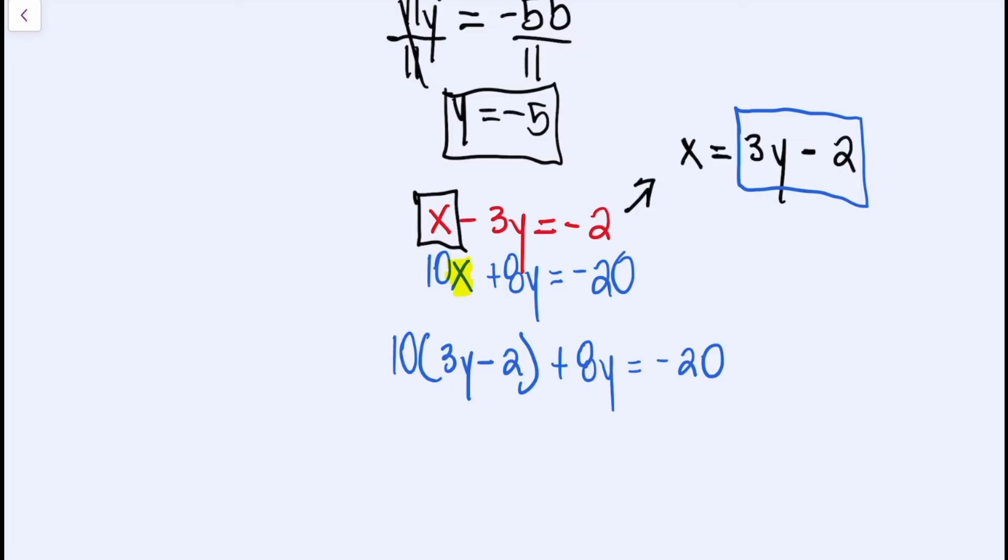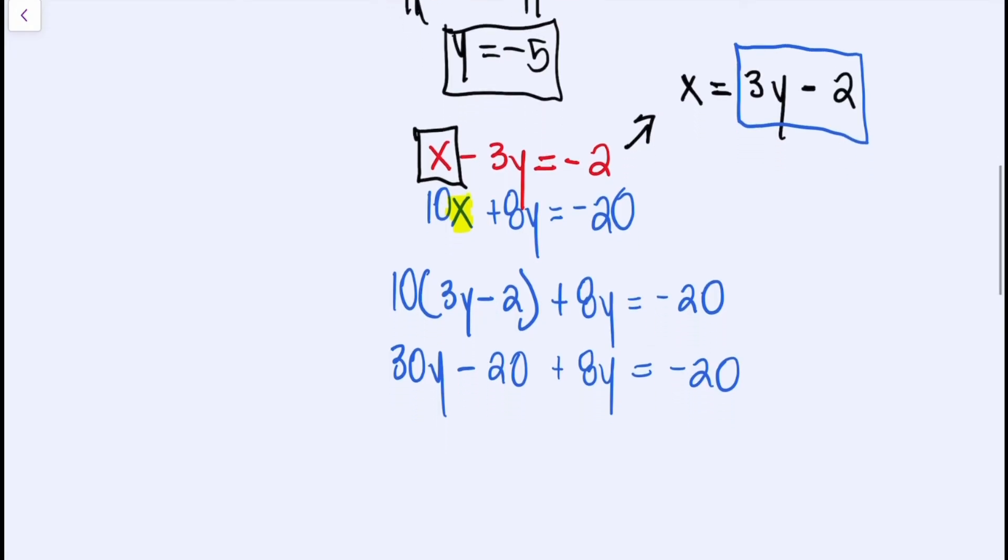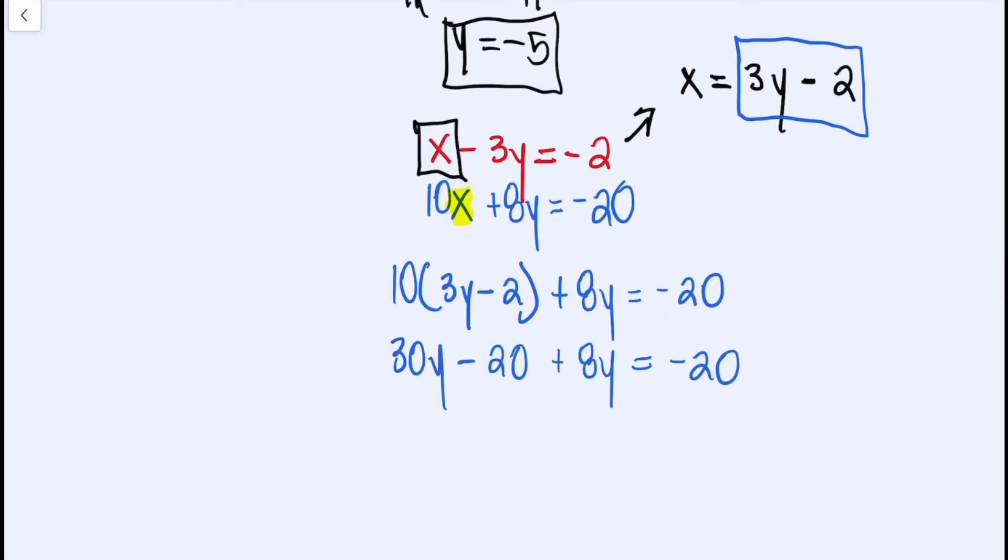Similar to the last problem, we are going to start off by distributing. So we have 30Y... This is where we should be at after we distribute. And we still haven't solved for Y. There's two things we could do. We could combine both our Ys, or we could combine the 20s. But what I'm going to do, let's just combine the Ys. That's a quick little step. Once we do this, we have 38Y minus 20 is equal to negative 20.